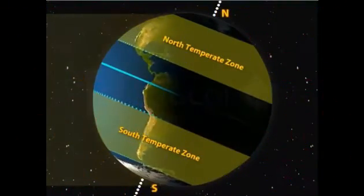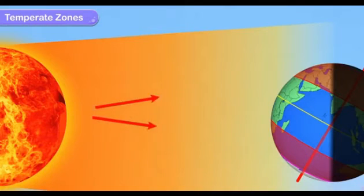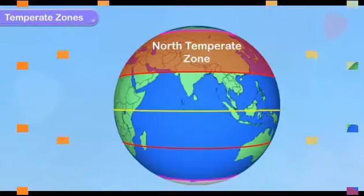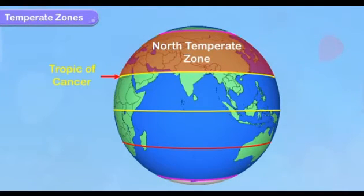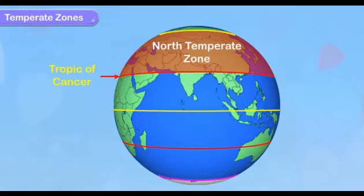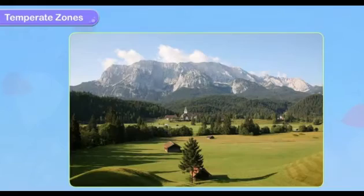The temperate zone receives slanting rays of the sun. So this region receives lesser amount of heat as compared to the torrid zone. The north temperate zone lies between the Tropic of Cancer and the Arctic Circle, and the south temperate zone lies between the Tropic of Capricorn and the Antarctic Circle. Temperate zones experience warm summers and cold winters.